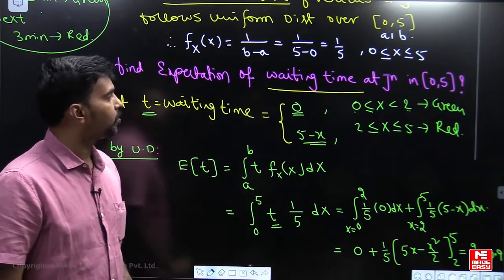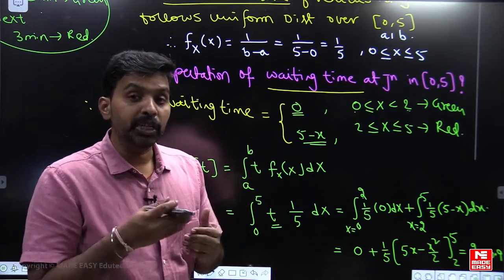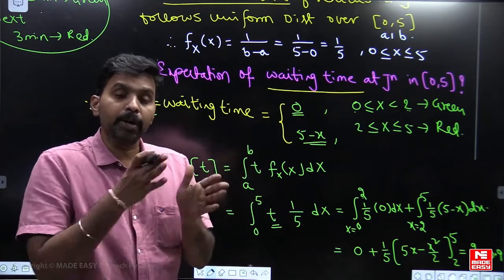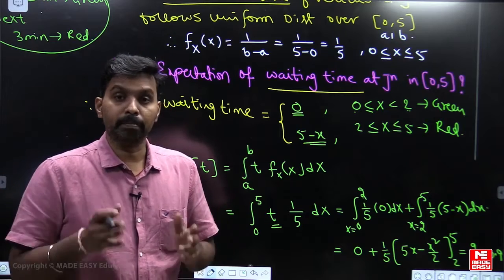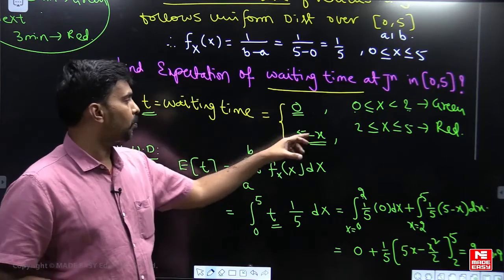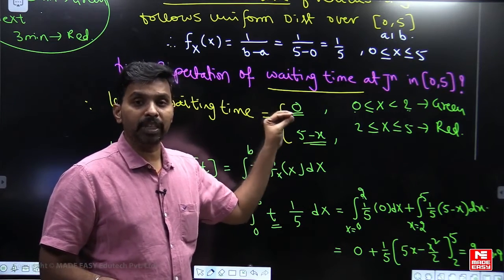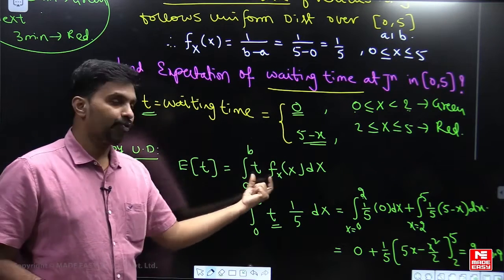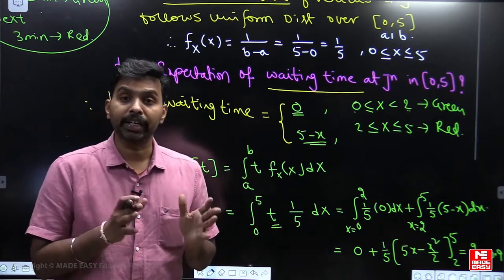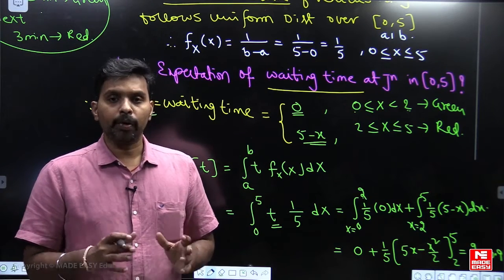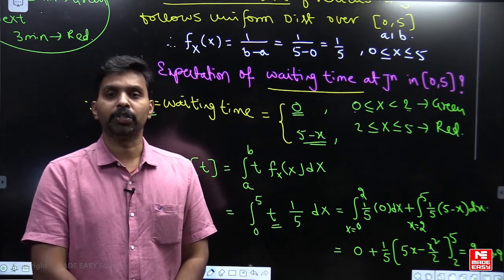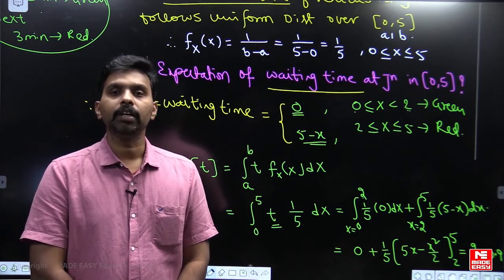So the expected waiting time at the junction is 0.9 minutes. The random variable was arrival time, but we found the expectation of waiting time, which depends on arrival time. Using the formula of expectation with uniform distribution, we evaluated the expected waiting time of vehicles at the junction. This is a very good application of uniform distribution. We will see more in the next video — thank you.